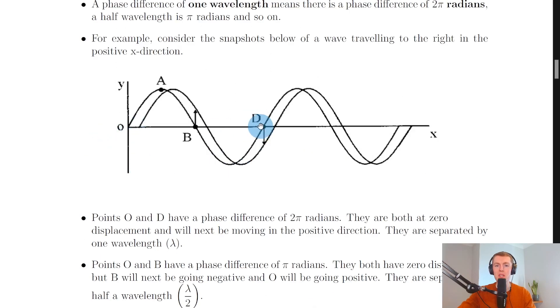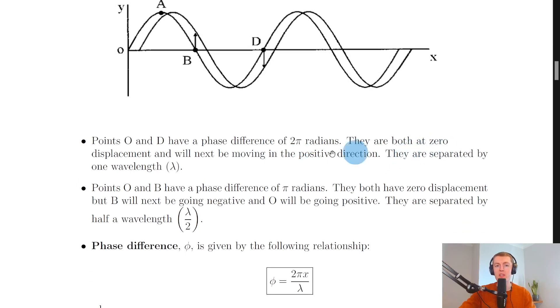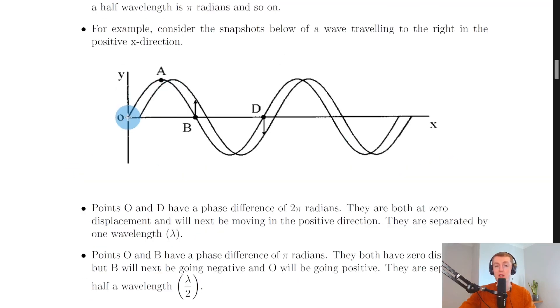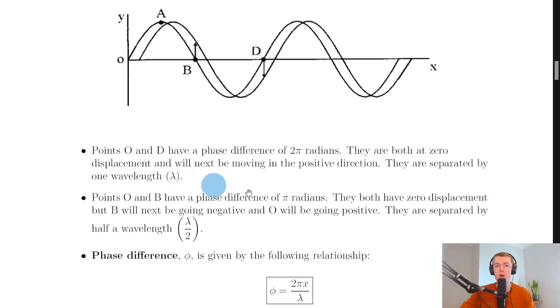The origin O to point D is one full wavelength apart and that means those two points have a phase difference of two pi radians. They are both at zero displacement and will next be moving in the positive direction. You can see that point O will be going into the positive x direction and the wave at point D will also be going into the positive x direction. They are separated by one full wavelength.